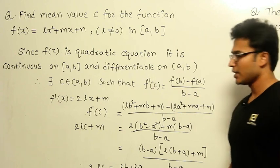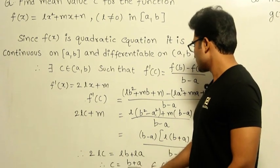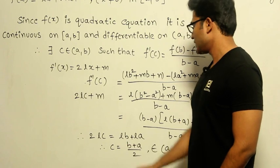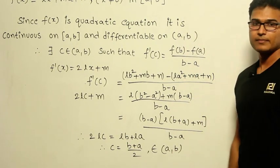Now if you try to solve it, you're going to get C = (b + a)/2, and also (b + a)/2 will definitely lie in the range [a,b].